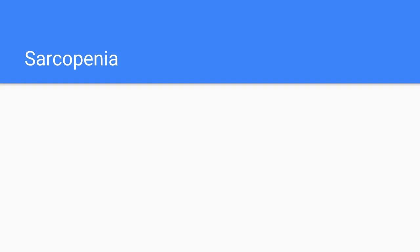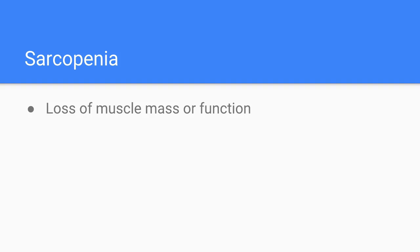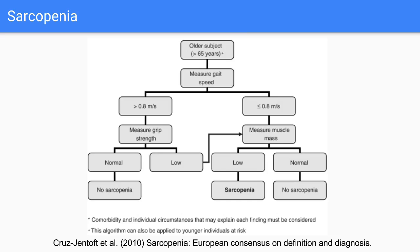Before moving on to treating frailty, I'm going to quickly look at sarcopenia, because it's hugely relevant to frailty. Basically, it's loss of muscle mass or function. People have looked at how to diagnose it, and in 2010 a basic diagnostic algorithm was created, which you can see here. All this really looks at is walking speed, grip strength, and muscle mass. You don't need to remember this diagram, but notice two of these areas — the two easiest to assess: gait speed and grip strength. It's not a coincidence that those are two of the five areas in the previous frailty definition.